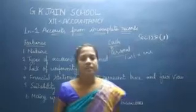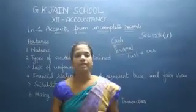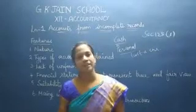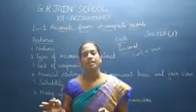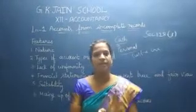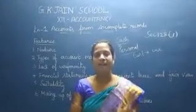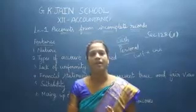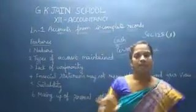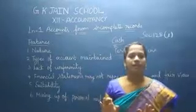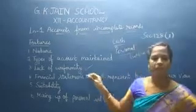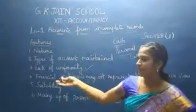Next is lack of uniformity. We have different organizations in the country — large scale, small scale, partnership, joint stock companies. They will all have their accounts in a proper way. But in incomplete records, it is not the same way. They will have different accounts to be maintained. So that comes under the lack of uniformity — it will not be the same as other companies.